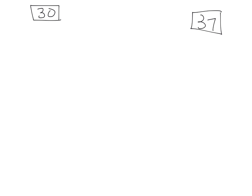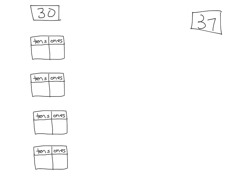Let's do a couple of specific examples. Let's start with the number 30. We can think of 30 as three quick tens — one, two, three. So that means we can think of it as three tens and zero ones.